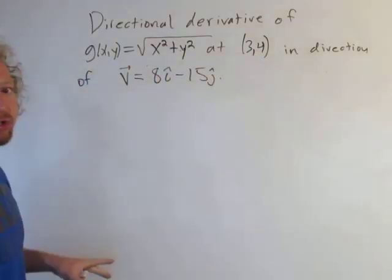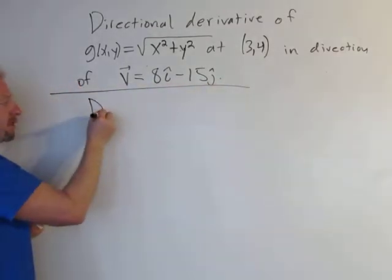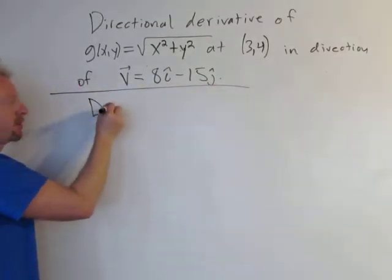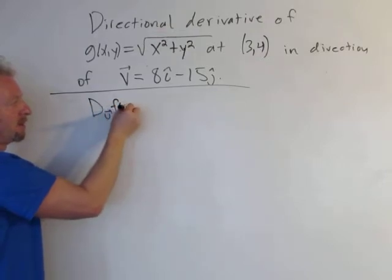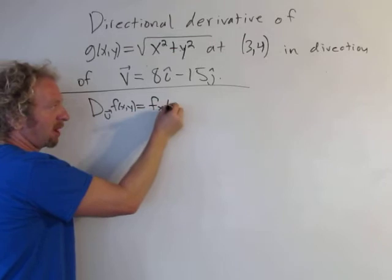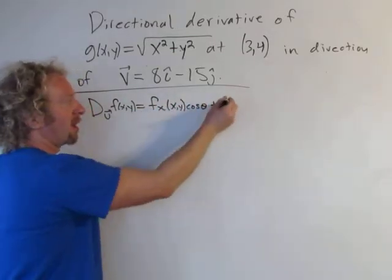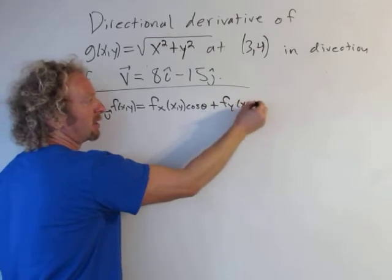The formula we're going to use for the directional derivative is the directional derivative in the direction of the unit vector u of f of xy. That's equal to the partial with respect to x at xy cosine theta plus the partial with respect to y at xy sine theta.